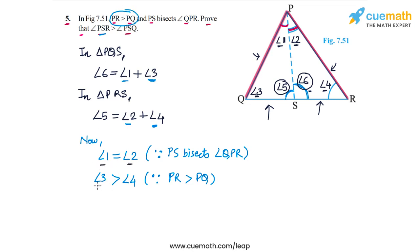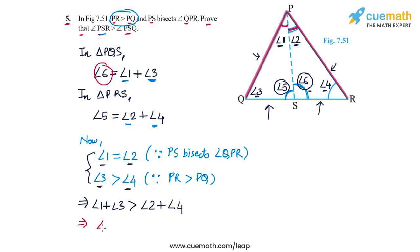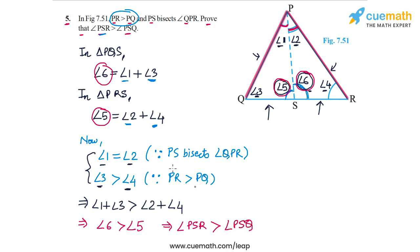We have angle 1 equal to angle 2, but angle 3 is greater than angle 4, so angle 1 plus angle 3 must be greater than angle 2 plus angle 4. Since angle 1 plus angle 3 is angle 6, and angle 2 plus angle 4 is angle 5, angle 6 is greater than angle 5 — that is, angle PSR is greater than angle PSQ. This completes our proof.